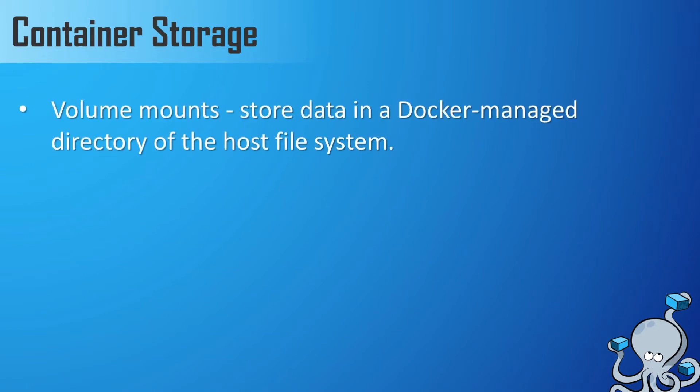First, we have volume mounts. Volumes store data in a specific directory on the host file system. This directory is managed by Docker, and only Docker container processes can modify this part of the file system. The directory is stored within a special section of the file system devoted to Docker. This is the preferred approach to managing data in a persistent way across multiple container life cycles with Docker. The data that a container writes during its lifetime stays there, even after the container exits and is removed.